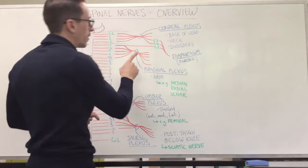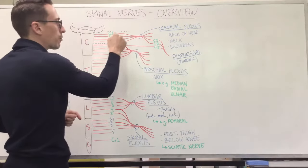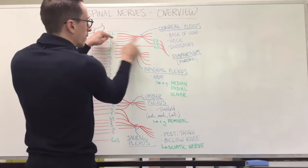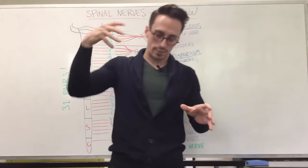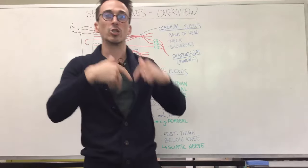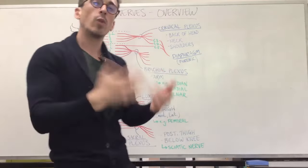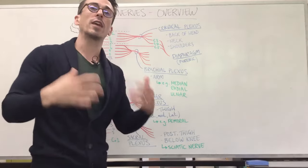And importantly, what you're going to find is if you were to take C3, C4 and C5 together, you'll find that they form the phrenic nerve and the phrenic nerve innervates the diaphragm, tells it to contract, allows for us to breathe. That's why we say C3, C4, C5 keeps us alive.